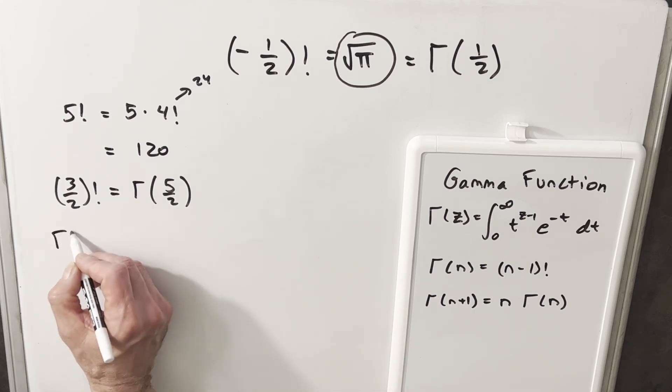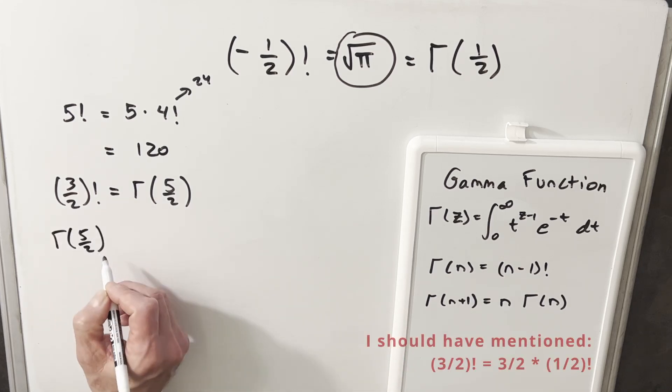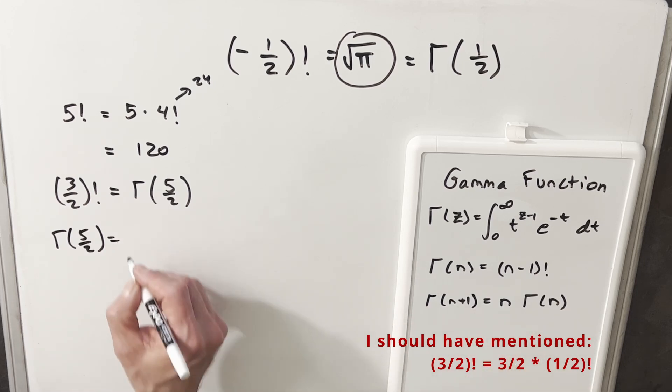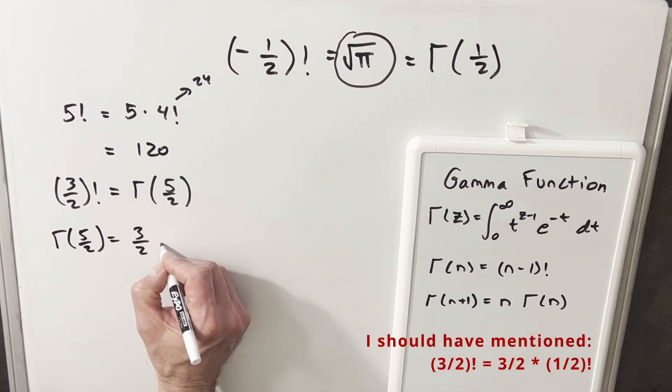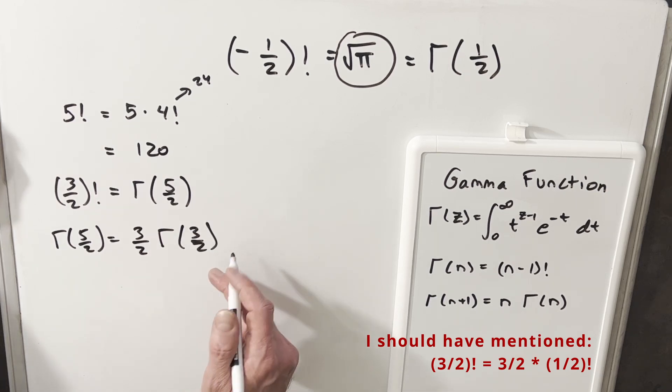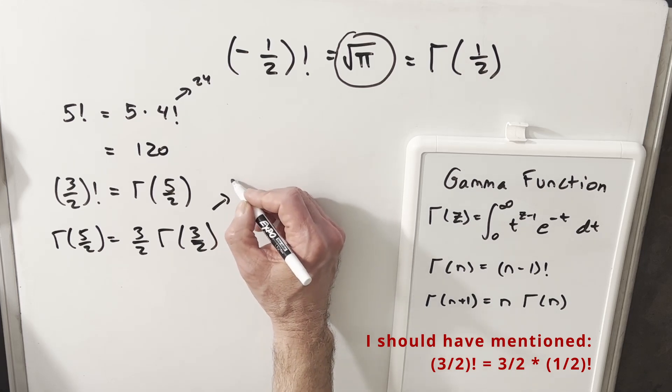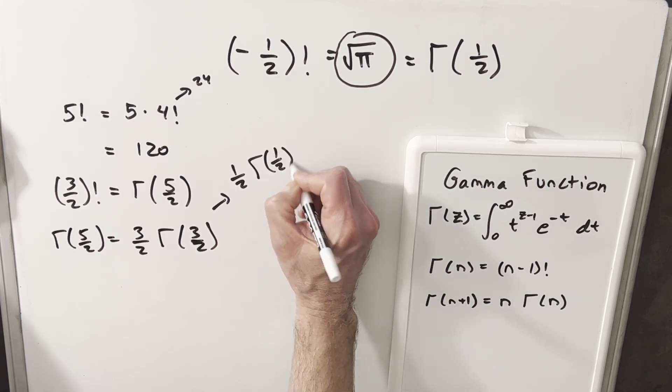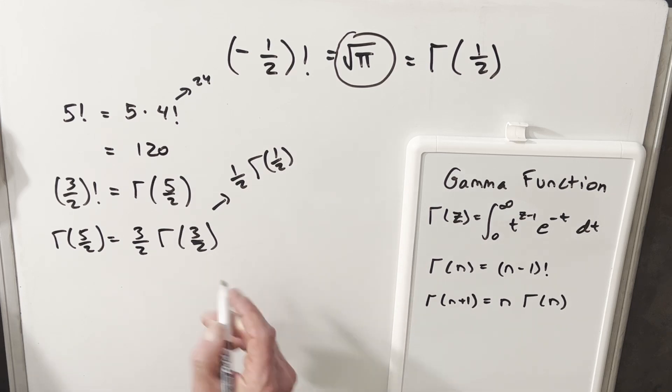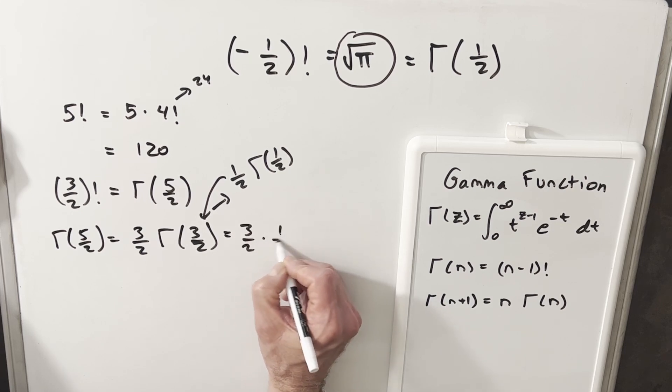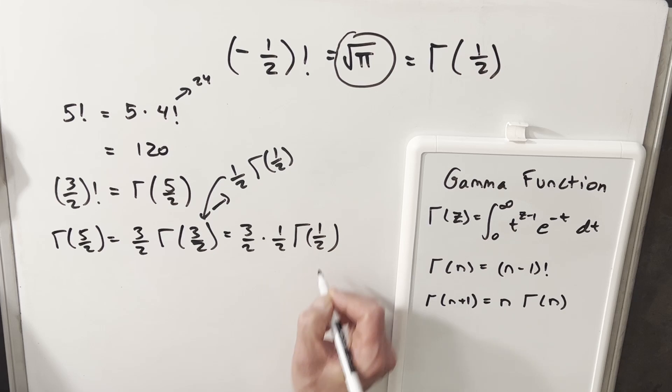Well, then using this last formula, gamma of 5 halves, we can write it as, this is our n plus 1 value. We can write this using this right side as 3 halves times gamma of 3 halves. And then we can just kind of repeat this process. Gamma of 3 halves, we can write as 1 half times gamma of 1 half, just using this same formula again. So then substituting that back in here, we have 3 halves times 1 half times gamma of 1 half.